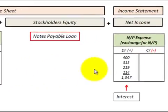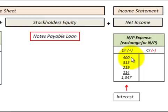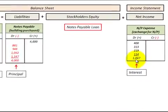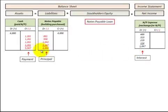We record our interest expense as part of net income on the income statement for the loan, recording $1,047 of interest expense as calculated. So the $4,000 debit plus the $1,047 interest expense on the income statement balances with the total payments made of $5,047.